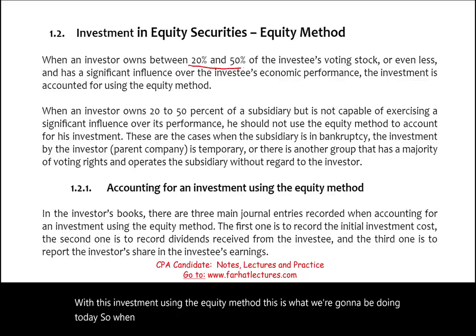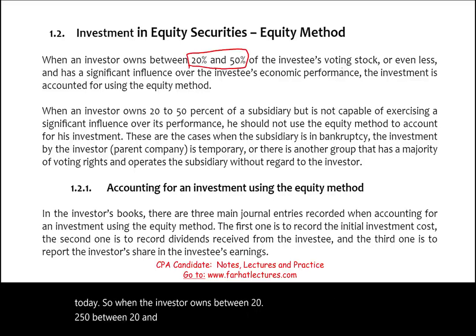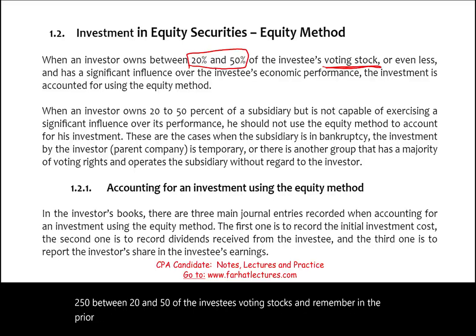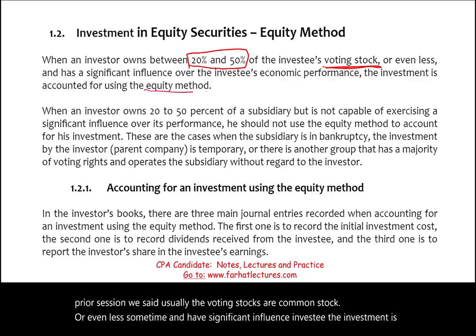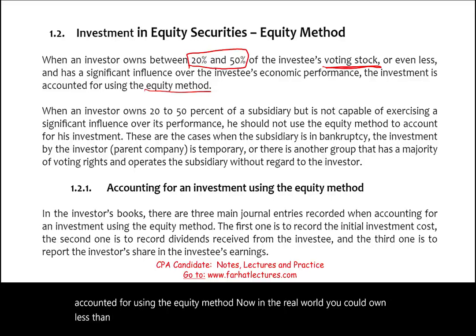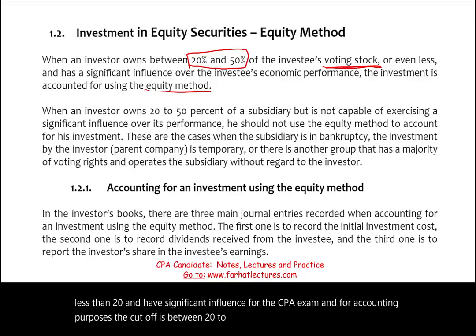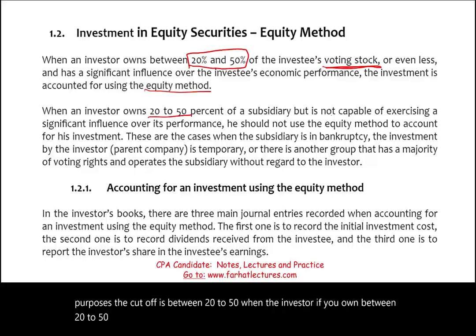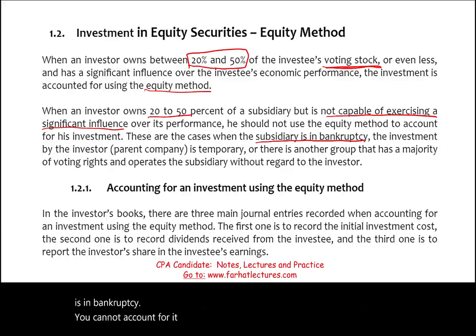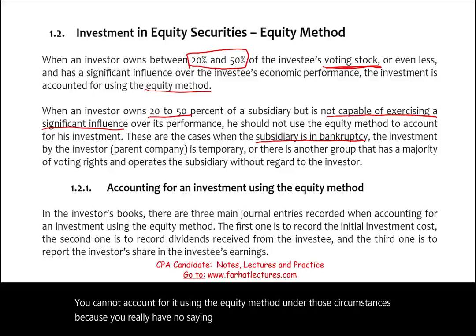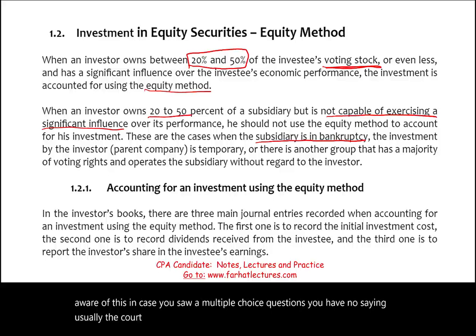When the investor owns between 20% and 50% of the investee's voting stocks — which are usually common stock — and has significant influence over the investee, the investment is accounted for using the equity method. In the real world, you could own less than 20% and still have significant influence, but for the CPA exam the cutoff is 20% to 50%. One exception: if you own between 20% and 50% but the subsidiary is in bankruptcy, you cannot use the equity method because the court appoints a trustee and you have no say.